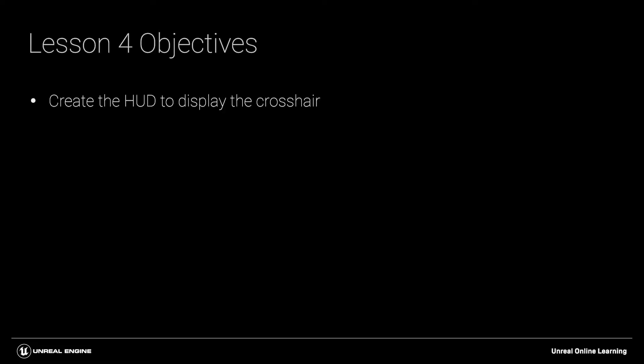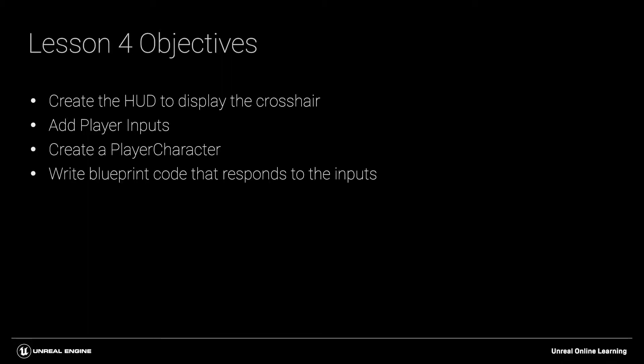Our objectives for this module are to create the HUD to display the crosshair. We'll assign inputs to control player movement. We'll create a player character and write blueprint code that responds to the inputs. Finally, we'll tell the game to use our new player character by creating a game mode.